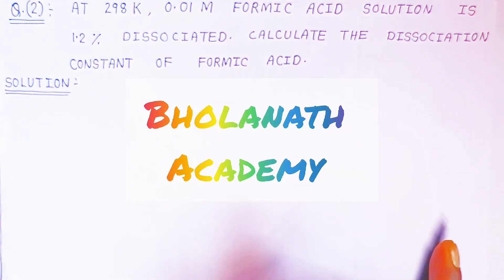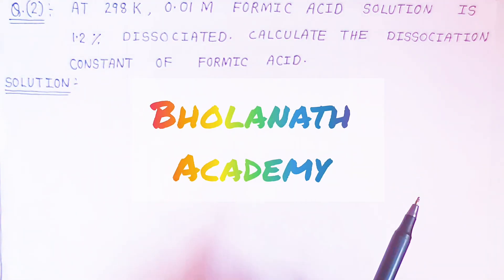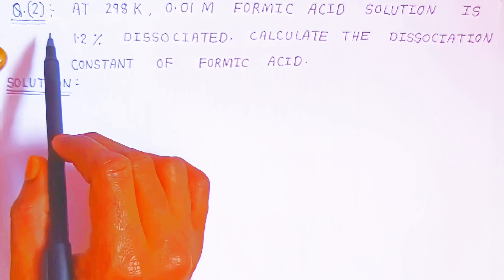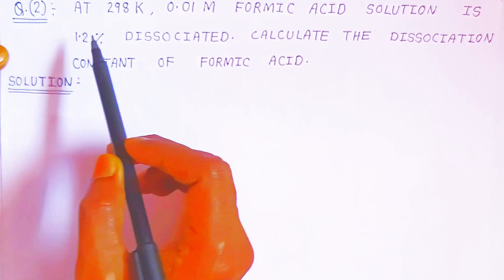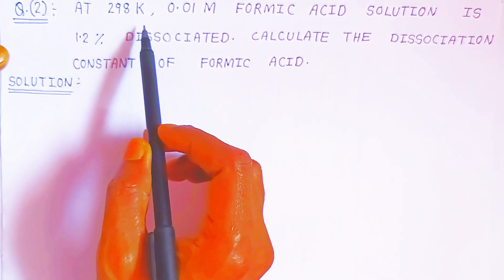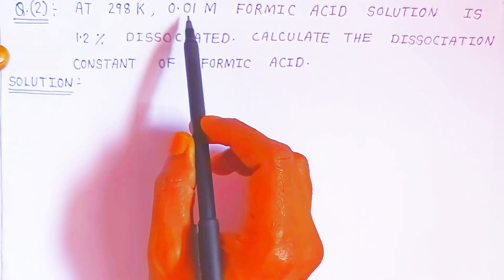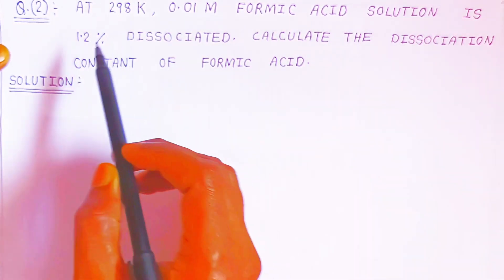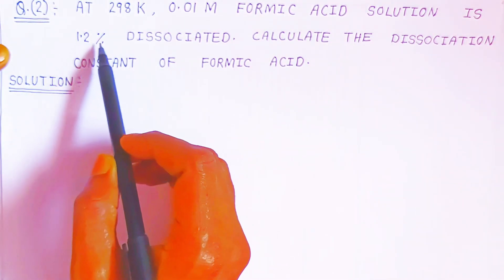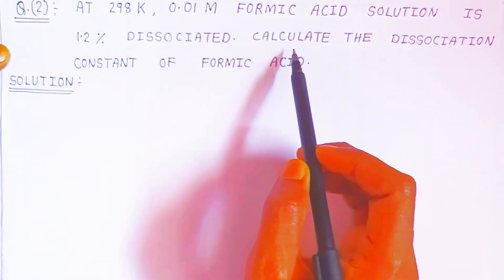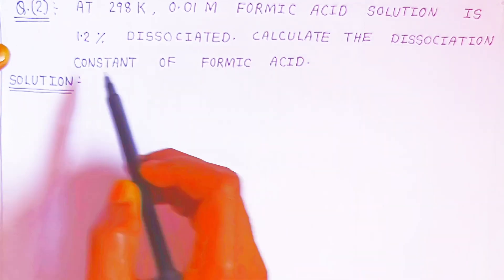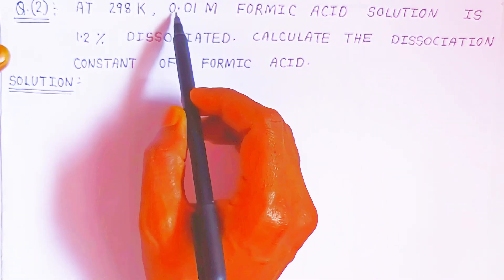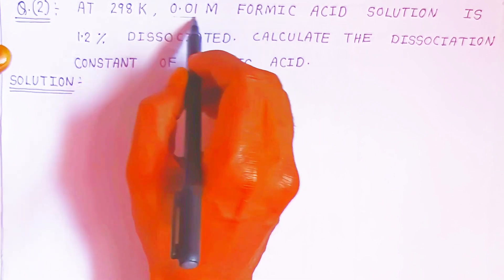Hello students, once again welcome to Bolanath Academy. In this video we are going to see question number two. At 298 Kelvin, a 0.01 molar formic acid solution is 1.2 percent dissociated. We have to calculate the dissociation constant of formic acid. What is given: 0.01 molar, that is the concentration, represented as small c.